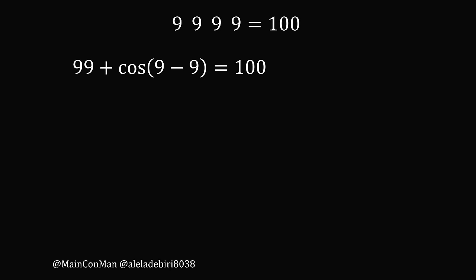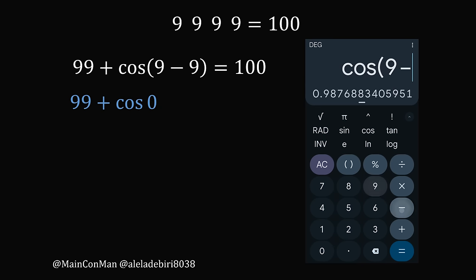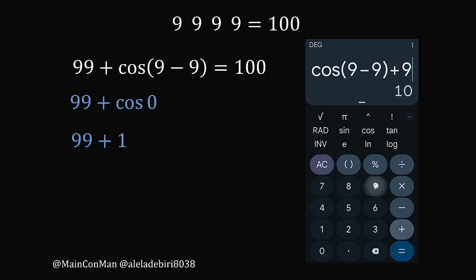Now we have a very different solution: 99 plus the cosine of (9 minus 9) equals 100. Why does this work? Well, 9 minus 9 equals 0. So we have 99 plus cosine of 0. Whether you're in degree mode or radian mode, cosine of 0 equals 1. So we have 99 plus 1, which equals 100.